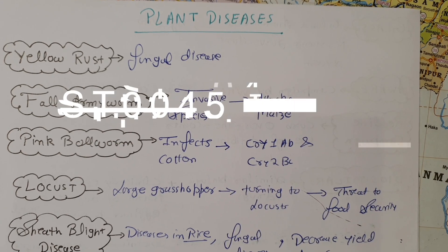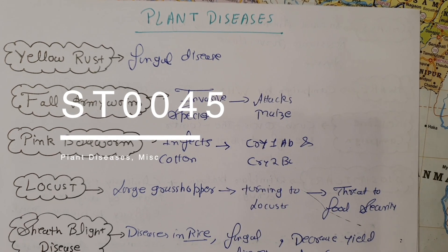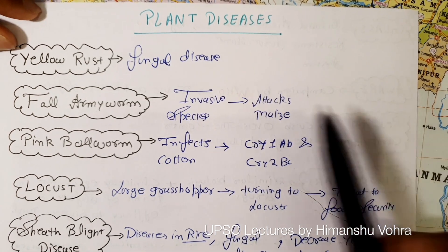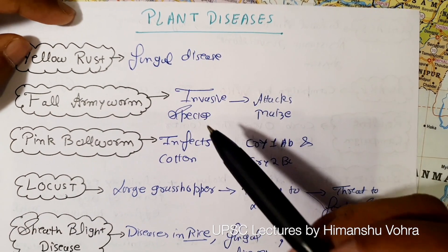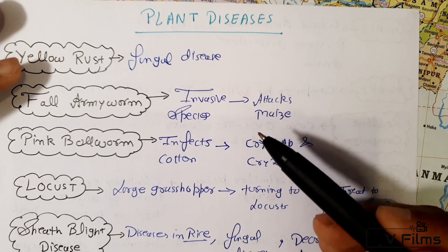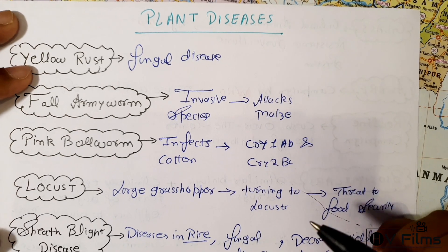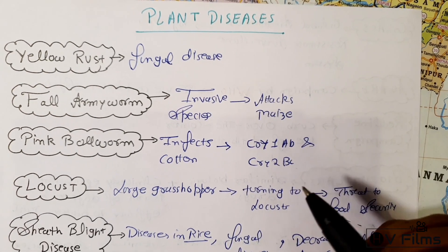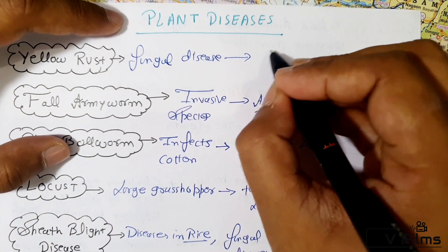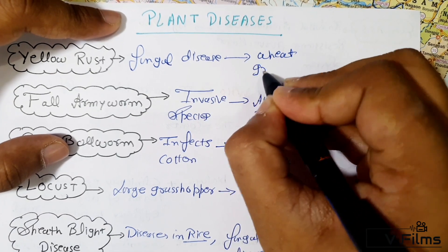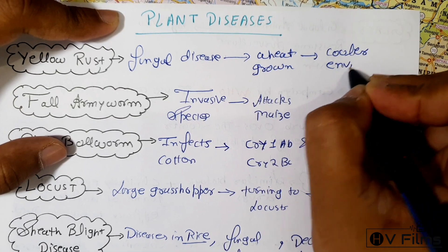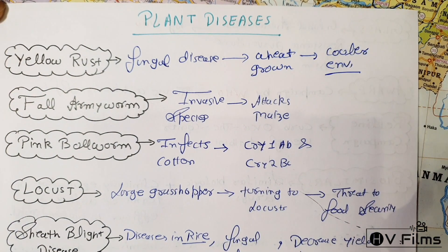In this lecture we will study about plant diseases. The first one is yellow rust, a fungal disease which turns crop leaves yellow and stops photosynthesis activity in them. It is one of the three wheat rust diseases, principally found in wheat-grown areas in cooler environments.